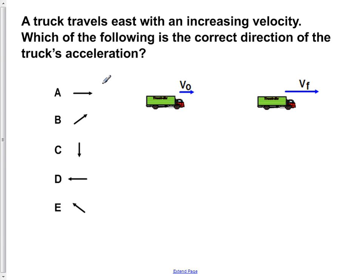A truck travels east with an increasing velocity. Which of the following is the correct direction of the truck's acceleration? So we have a truck here moving along level ground. It's not very straight, but level ground, and we see that it's increasing its velocity.